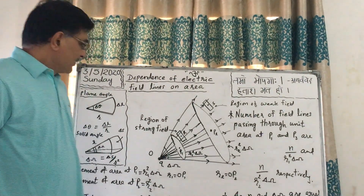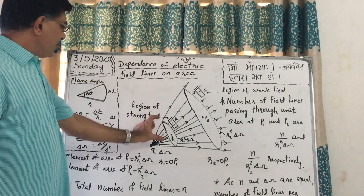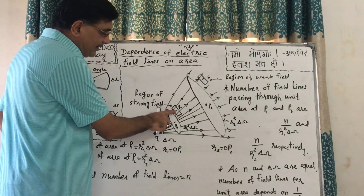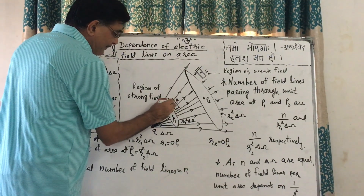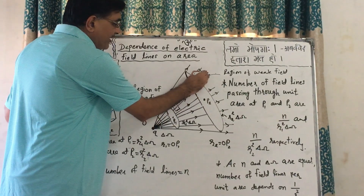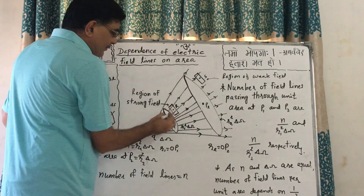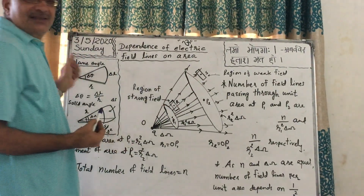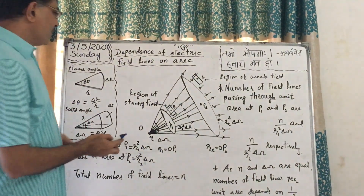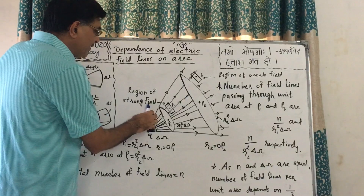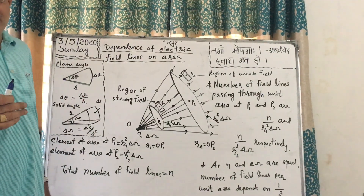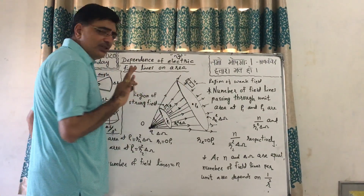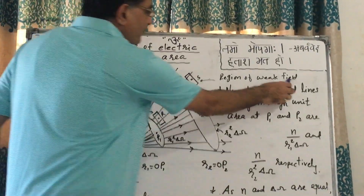The same is shown here in the figure. Near point P1, I have considered some area, and near point P2 another area. From the area near P1, two lines are passing, while in the area near P2 only one line is passing. This is because P1 is in a region of strong field — field is KQ/R² — so less distance means stronger field. P2 is a region of weak field, so number of field lines decreases.